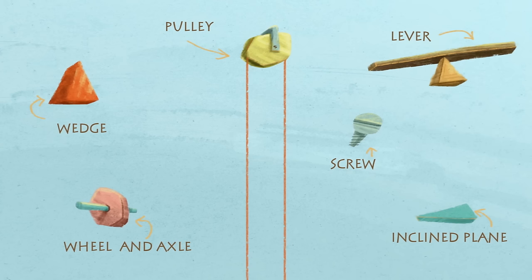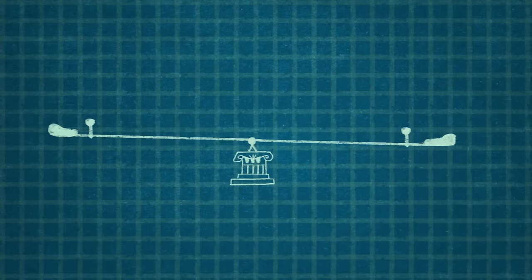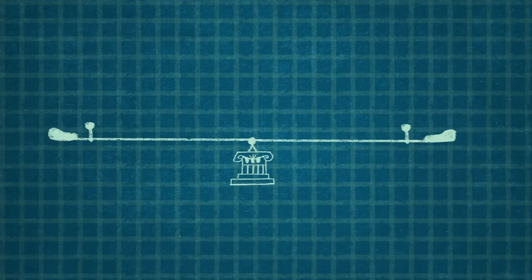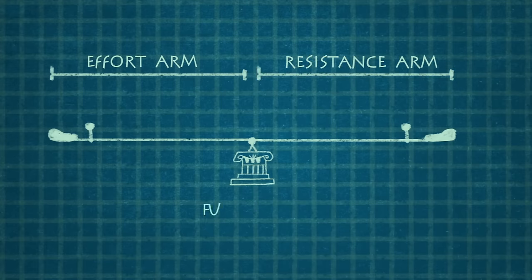Let's take a look at how it works. Every lever consists of three main components: the effort arm, the resistance arm, and the fulcrum.